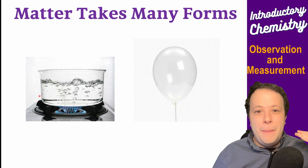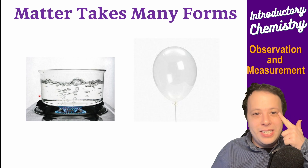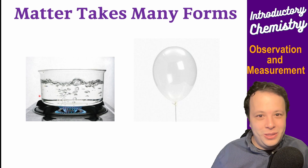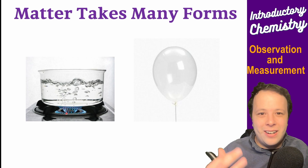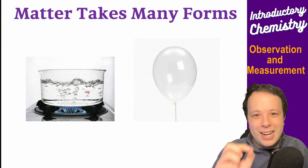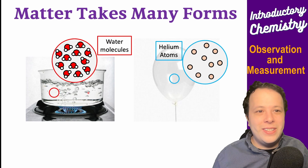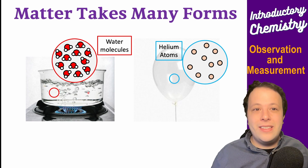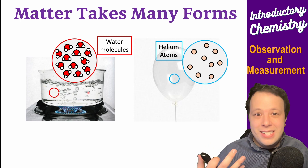Matter takes up many different forms — so what do you observe and how can you measure it? If you look at a pot of boiling water, what are you seeing on the atomic scale? Chemistry is all about atoms. If you zoom in on that water, you see water molecules — tiny atoms bound together. A balloon filled with helium has atoms so far apart and so light — so not dense — that it causes the balloon to float.